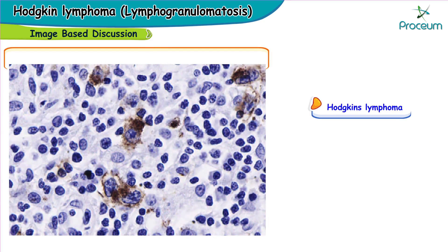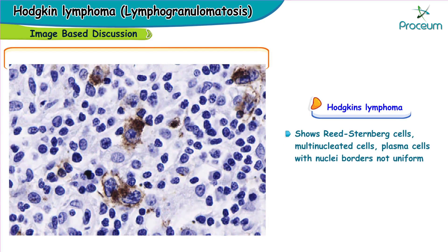Here's another image showing Reed-Sternberg cells with multi-nucleated cells visible. This is a plasma cell with multiple nuclei, and you can clearly appreciate that the borders of this plasma cell are not uniform.